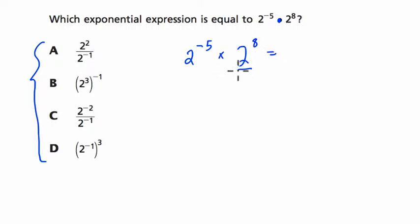Now, when we multiply equal bases, the bases here are 2 and we have different exponents. It doesn't matter if the exponents are different. If the bases are the same, we add the exponents. We're multiplying, so this ends up equaling 2 to the 3rd. Negative 5 plus 8 is 3.